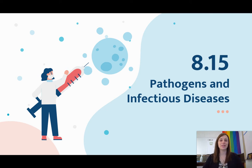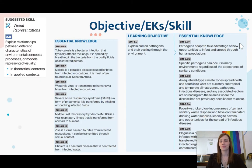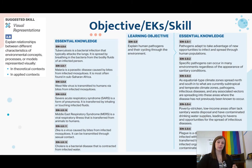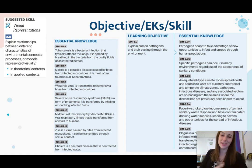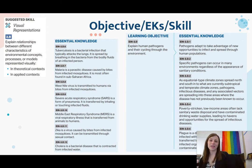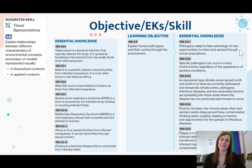Hello, everybody. Today we're going to be learning about section 8.15, which is on pathogens and infectious diseases. There is a lot of essential knowledge that you will be gaining on all of these different types of infectious diseases and how they're transmitted, but the overall learning objective is that you can explain human pathogens and their cycling through the environment.